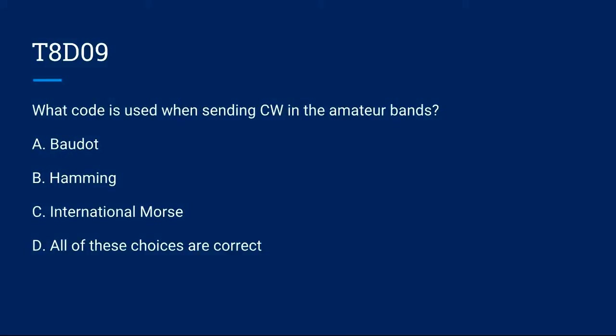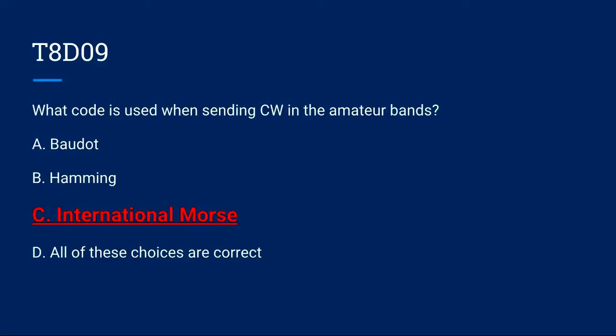T8D09: What code is used when sending CW in the amateur bands? A. Baudot. B. Hamming. C. International Morse. Or D. All of these choices are correct. The correct answer is C: International Morse.